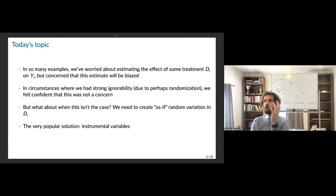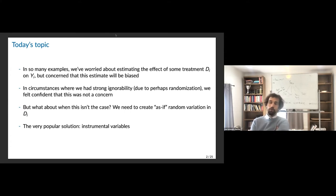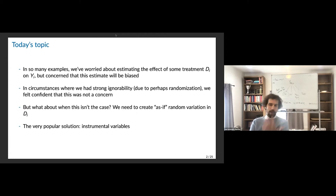The topic comes from the idea that in so many of the examples we talked about, we wanted to estimate the effect of some treatment D_i on Y. We want to know this average treatment effect, and the concern was that the estimate was going to be biased. In so many of these research designs, we're asking how can we propose a design such that we can estimate this causal problem we're interested in. In circumstances where we had strong ignorability — for example, where we had randomized something — we were pretty confident that bias wasn't a concern.